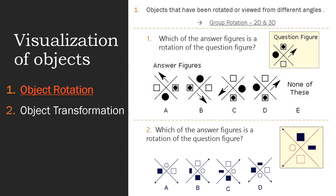Let's check the options. In option A, at the bottom of the arrow mark we don't have an unshaded square, so option A is the wrong answer. Options B and D also don't have this. Only option C has what we are looking for, so it is the exact rotated figure of the question figure.